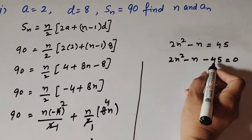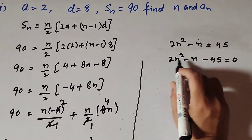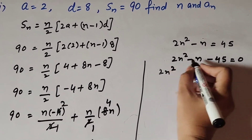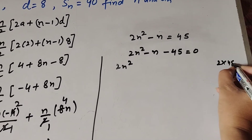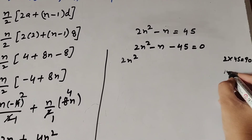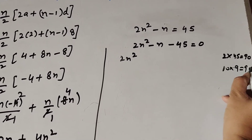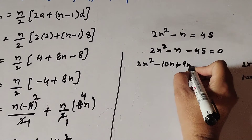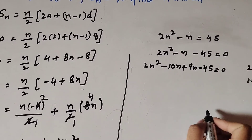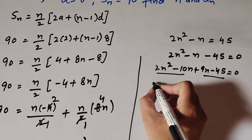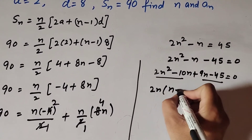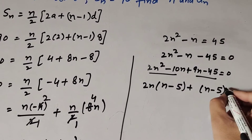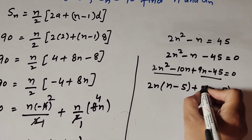To factor this quadratic, the first term multiplied by the third term gives 2 times 45 equals 90. We need two numbers that multiply to give 90 and add to give minus 1. That is minus 10 and plus 9: 10 times 9 equals 90 and minus 10 plus 9 equals minus 1. So we write: 2n squared minus 10n plus 9n minus 45 equals 0. Taking 2n common from the first pair gives n minus 5.